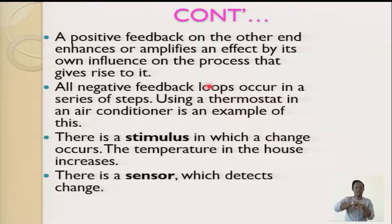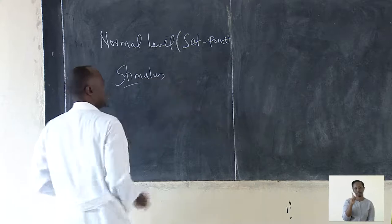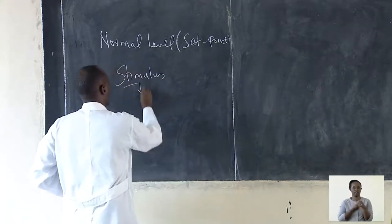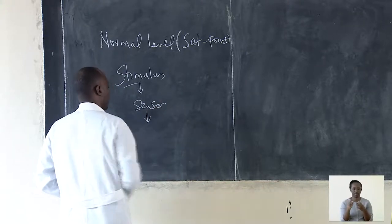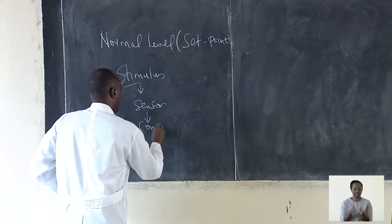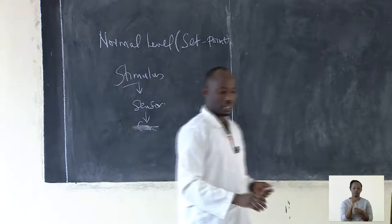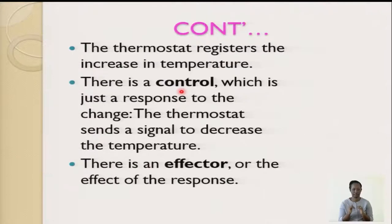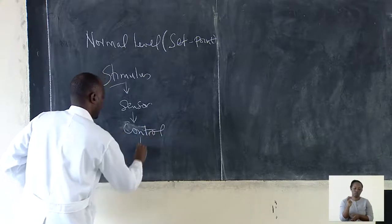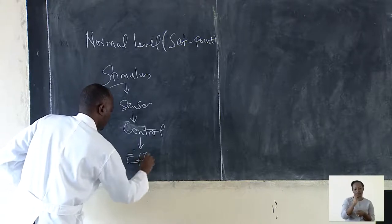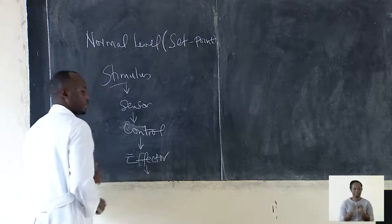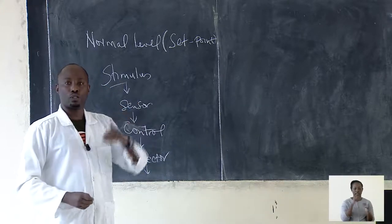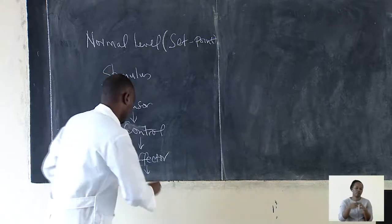All negative feedback loops occur in a series of steps. We have: the stimulus — a changing environment; the sensor; the coordinator or controller; the effectors; and finally, the response. A stimulus is any change in the environment. After a stimulus causes a change, there is a sensor that detects it and sends it to the controller — the brain. The brain informs the responsible muscles or glands to bring back the response, returning the system to its normal state.